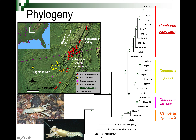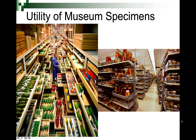The key takeaway is really interesting. Although jonesi and hamulatus look like their populations are fairly healthy and probably don't need conservation, because we had museum specimens mixed in with recently collected individuals, we actually see that some of the original population are different species that have yet to be described. These are species that look like jonesi or hamulatus but genetically appear very different. So it's likely that conservation should be focused on these other two genetically unique species rather than where we originally thought.